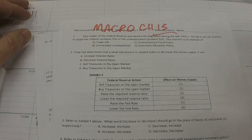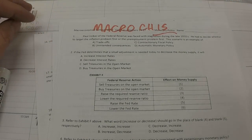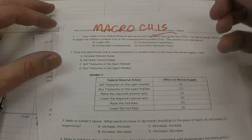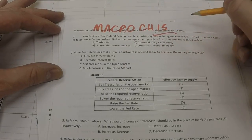Hello, class. Here we are. We're going to go over macroeconomics for exam number five. It's mainly about chapter 15, which is monetary policy.